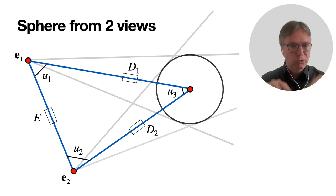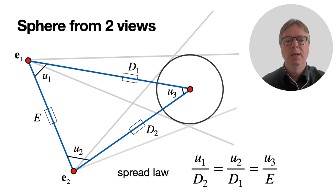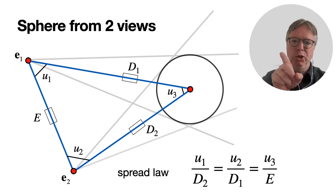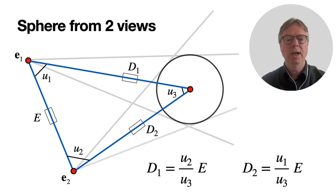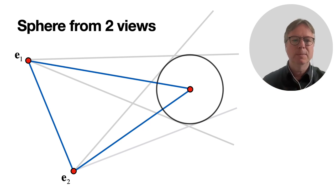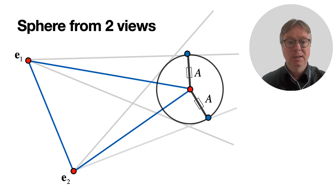Now we can use the spread law from rational trigonometry, which says that u1 over opposite quadrants d2 equals u2 divided by d1 equals u3 divided by E. If we rearrange that, we have expressions for d1 and d2. So basically we know the position of the center of the sphere from two views, two visual cones. d1 is u2 over u3 times E, and d2 is u1 over u3 times E.